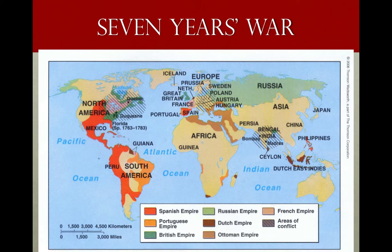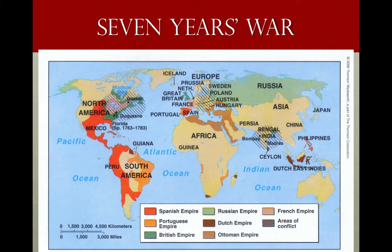It's also a world war — there's fighting in Europe, Eastern Europe, and in India over control of that region. This becomes a very expensive war and will lead to problems for the British after it. But they do get a great deal — they win the war, conquer the city of Quebec, and gain the territories that the French had in the Americas: Canada and parts of the Midwest around the Great Lakes, places like Illinois, Michigan, and Indiana, up to about the Mississippi River.